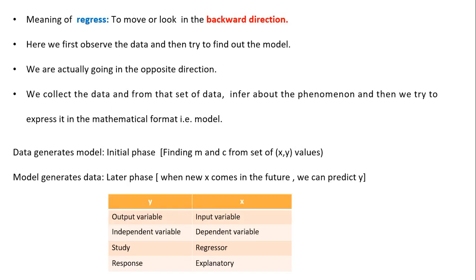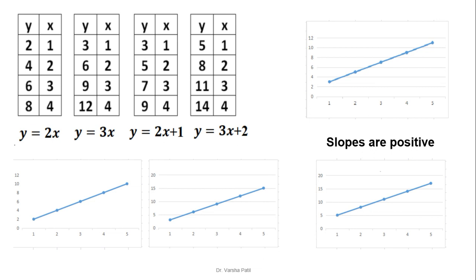Why is it called regression? Consider a table of y and x, where y is the dependent variable and x is the independent variable. By looking at the values, we can see immediately that whenever x is 1, 2, 3, 4, y is doubled. So we can write the equation y equal to 2x. This is what regression means — we are looking at the data in the backward direction to find out the relationship, and once found, when a new value of x comes, for example x equal to 10, we can predict y equal to 20.